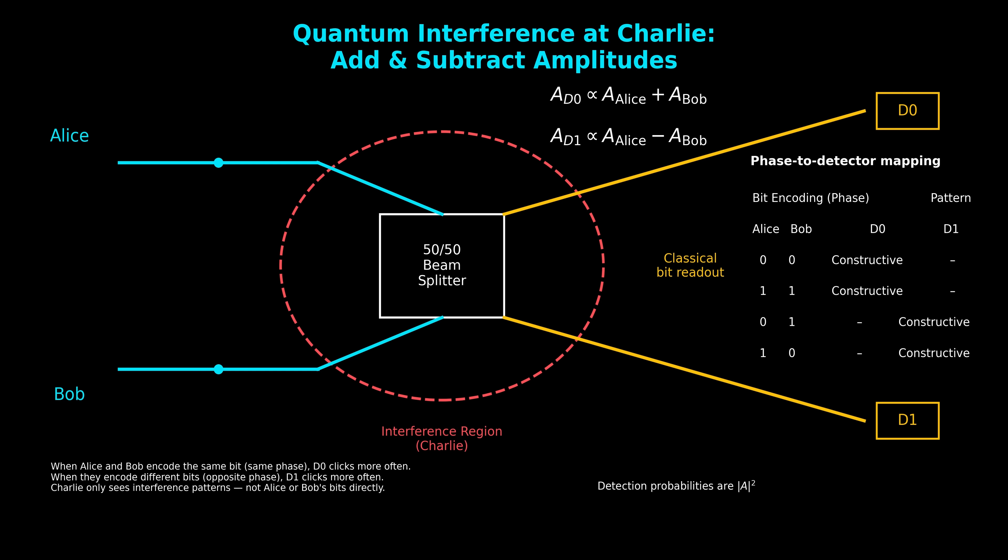This is one of the core secrets of MDI-QKD: Charlie never learns Alice's bit or Bob's bit directly — he only sees the interference between them. The red dashed ellipse marks the interference region, where the two incoming photons overlap in space and time, and where their phases either add or subtract. Quantum mechanics doesn't add intensities; it adds amplitudes, and amplitudes are signed complex numbers. That's why the phase matters so much. The two equations show how the beam splitter combines amplitudes: D0 receives the sum of Alice's and Bob's amplitudes, while D1 receives the difference.